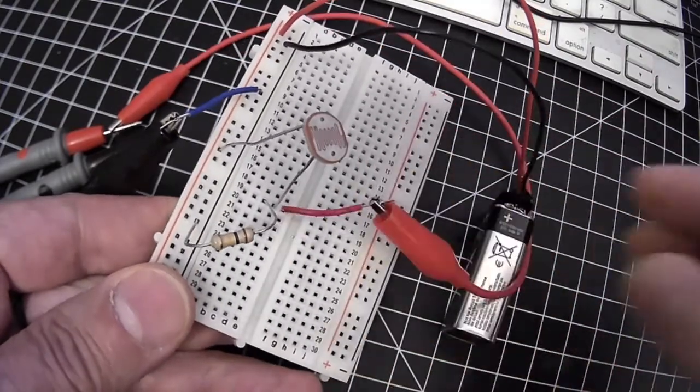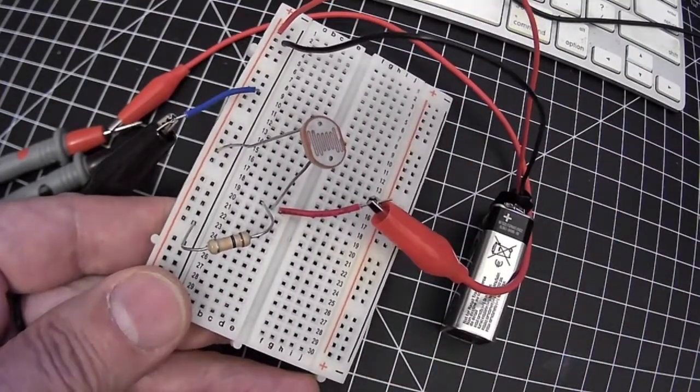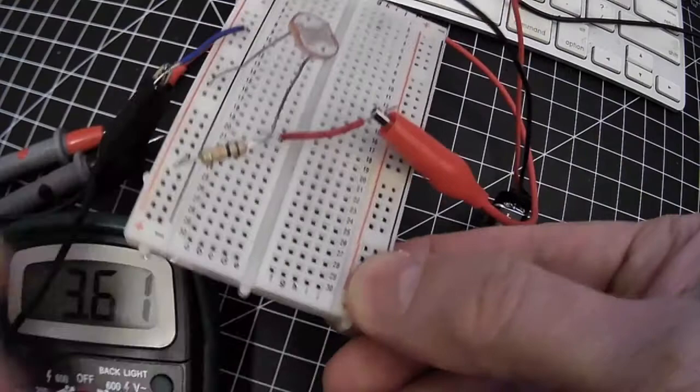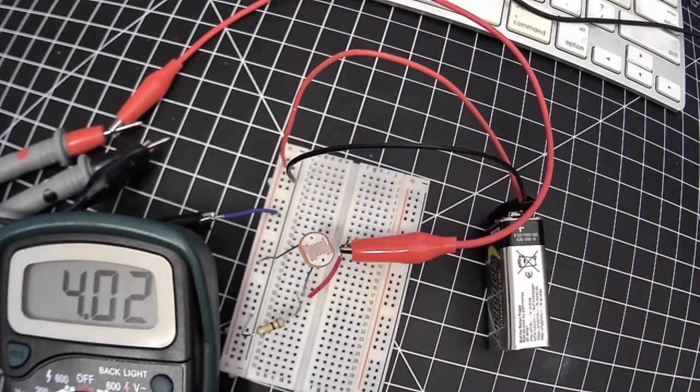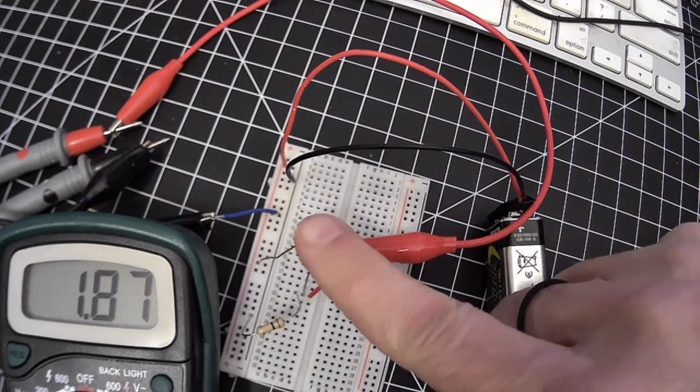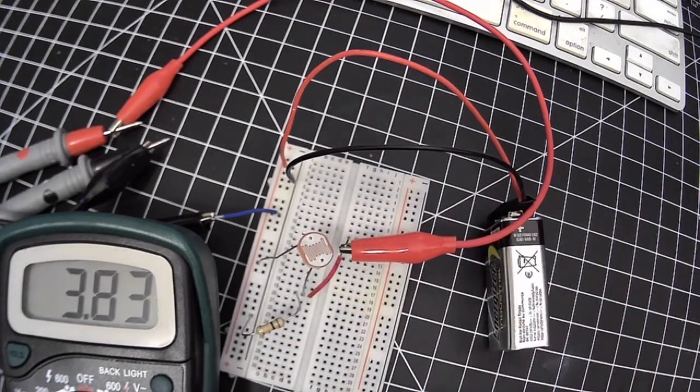If we measure the voltage between that voltage division point and ground, we'll find that as the proportional amounts of resistance change between R1 and R2, we're getting a changing voltage out.